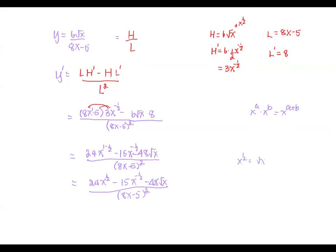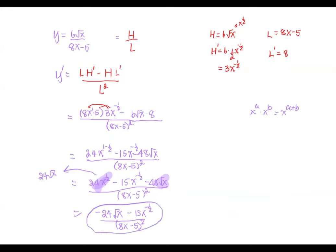Since x to the power 1 half is the same as square root x, the last term and the first term can be combined as like terms. Therefore, we can combine them to get negative 24 square root x minus 15x to the negative 1 half, all divided by the quantity 8x minus 5 to the power 2. This gives us the derivative of y equals 6 square root x divided by 8x minus 5.